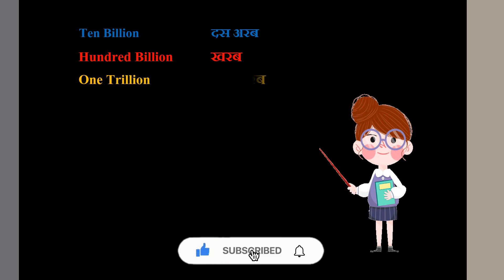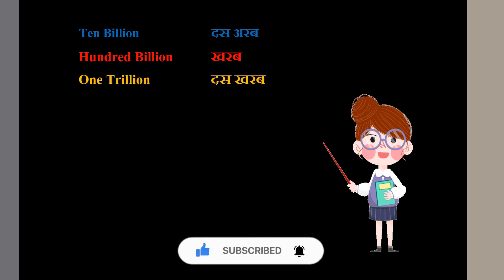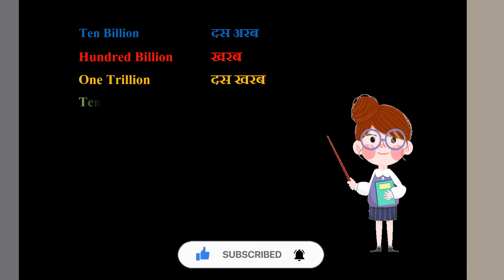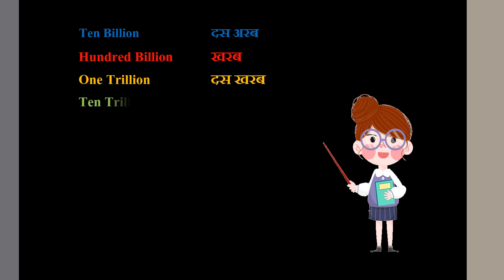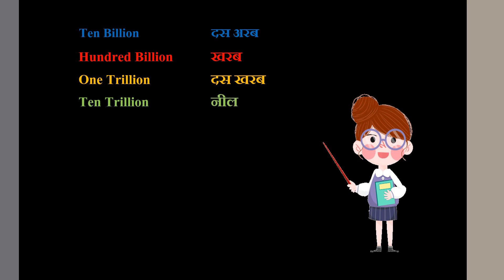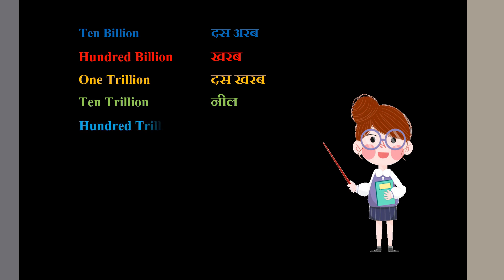1 trillion means 10 Karam. 10 trillion means Neen. 100 trillion means 10 Neen.